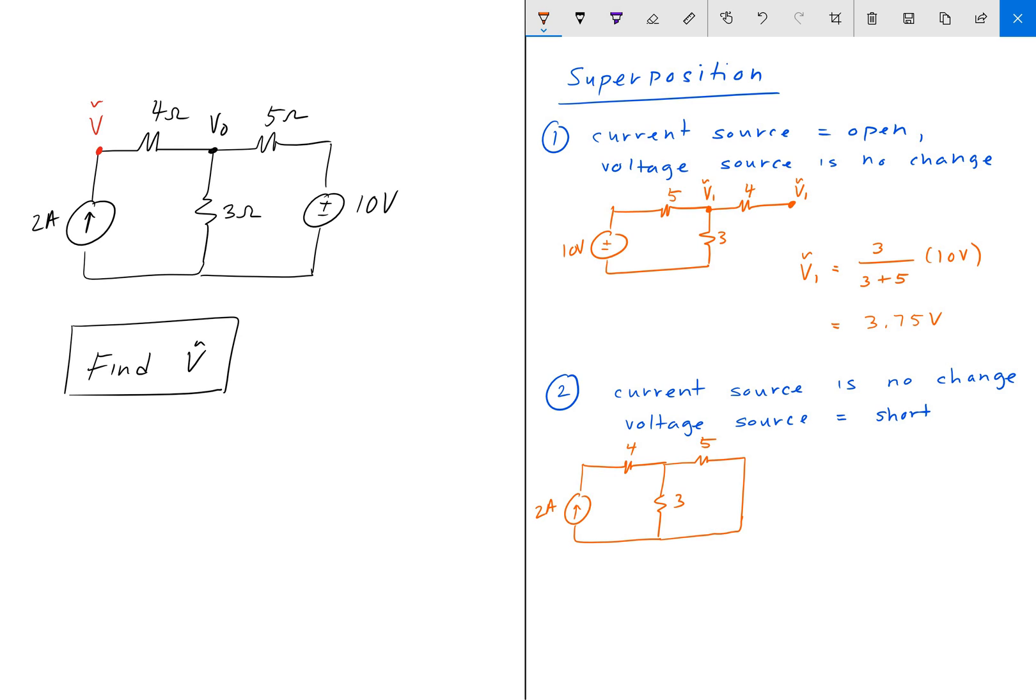And so when we do that, we see that 5 and 3 are in parallel. So 5 in parallel with 3 gives us the product over sum. So that is 15 over 8, which is 1.875.